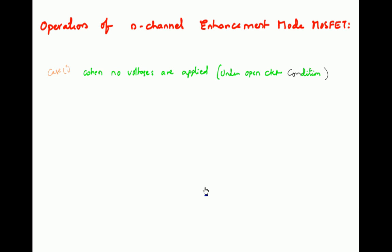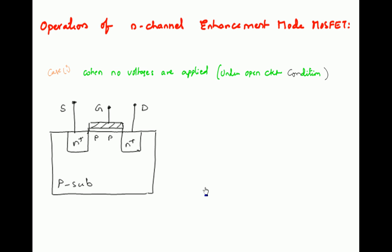We will discuss the operation of N-channel enhancement mode MOSFET. This operation is divided into several cases. Case 1: when no voltages are applied, the MOSFET is simply kept open — no terminals are connected to any voltage. So there will be no channel formation and no current flows. ID is equal to zero even if VDS is applied, because with no channel there is no drain current.